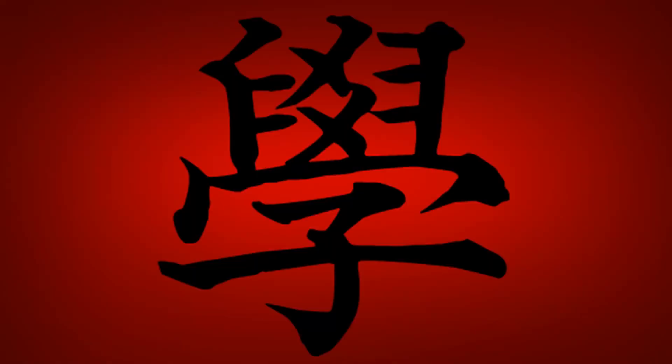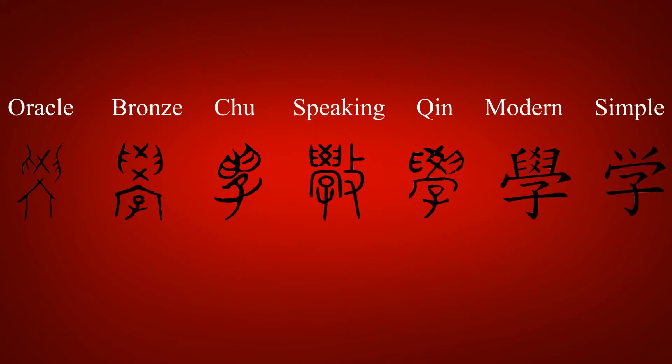This character is actually simplified from this Chinese character, which more closely resembles the original form. The ancient form of this kanji is a radical in the form of intermingling hands over a radical for roof, giving the idea of hands-on learning in a building.